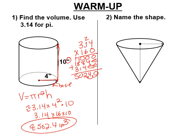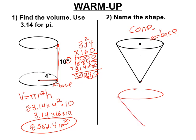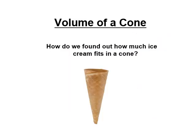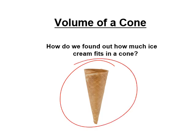A cone has a circle for a base — you can flip it upside down, that circle is the base, and then it comes to a point. To draw a cone, you draw an oval as best you can and bring it to a point. So how much ice cream comes in a typical cone? We're actually going to calculate that.